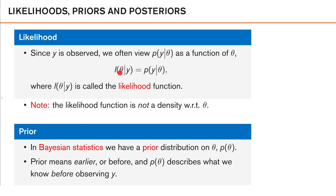We read this as the likelihood of theta given y. Note that we have switched the order: here we have y given theta, but in the likelihood notation we have theta given y, to emphasize that we view this as a function of theta. We often speak of this density as our likelihood, but we should be clear that we view it as a function of theta and that the likelihood is not a density with respect to theta. For example, if we integrate over all possible values of theta, in general this integral would not be 1, which is a requirement for a proper density.